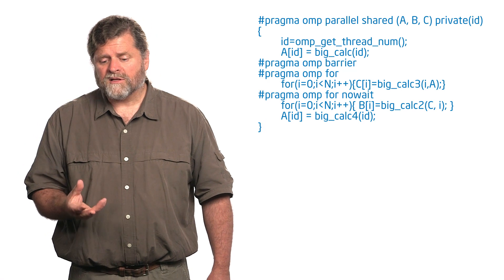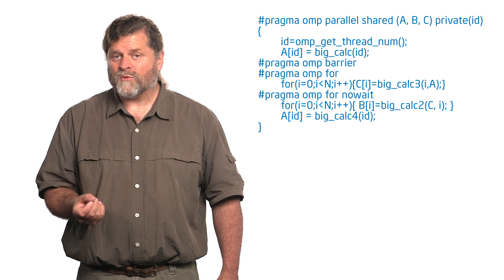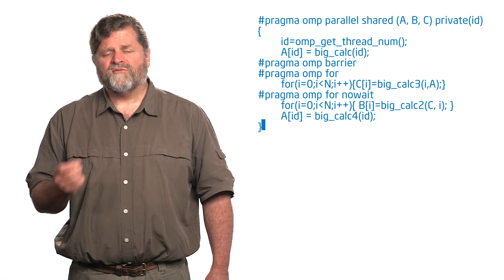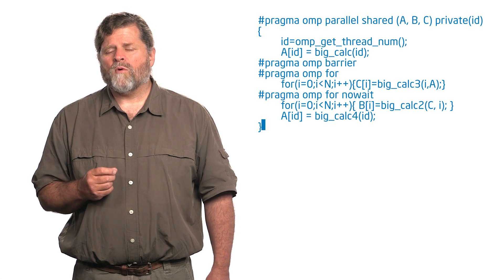That holds for any work-sharing construct. A work-sharing construct in OpenMP, by default, has a barrier at the end of that construct. Now look at this code closely — I do a computation using array C, so I really did have to wait until the previous loop was done. But I'm not using B in the following statement, so why would I want that barrier there? Anytime you throw synchronization constructs — barriers, critical sections, atomics — those add overhead. If someone is sitting and waiting at a barrier for everyone else to finish, they're not doing useful work, and that kills your performance. So barriers: you want them when you need them, but if you don't need them, you don't want them there.